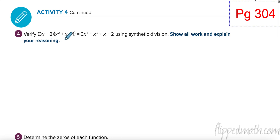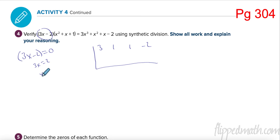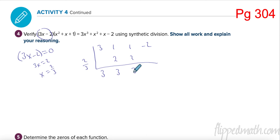On page 304 they want us to verify using synthetic division. This one is a little different. I divide with coefficients 3, 1, 1, negative 2, and my divisor is 3x minus 2. Because I have a leading coefficient, I set it equal to zero: add 2 and divide by 3, giving me 2/3. Bringing down: 2/3 times 3 is 2; 1 plus 2 is 3; 2/3 times 3 is 2; 1 plus 2 is 3; 2/3 times 3 is 2; negative 2 plus 2 is 0. No remainder, so it is a factor.